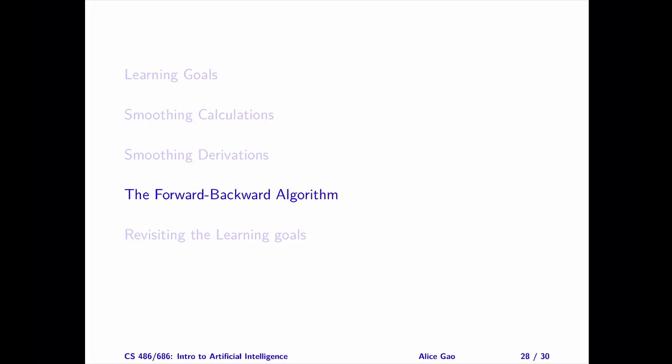That's everything on the forward-backward algorithm. Let me summarize. After watching this video, you should be able to describe how we can calculate the smooth probabilities efficiently using the forward-backward algorithm. Thank you very much for watching. I will see you in the next video. Bye for now.